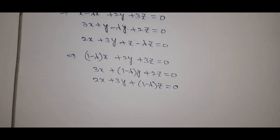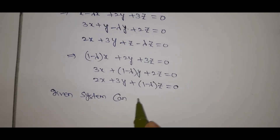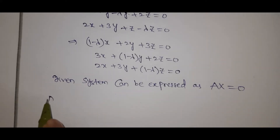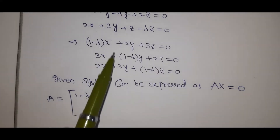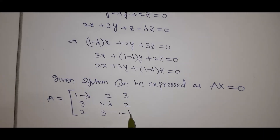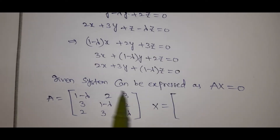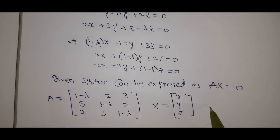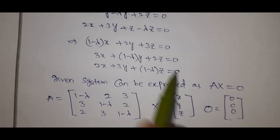The given system can be expressed as Ax = 0, where the A matrix has coefficients: first row (1−λ, 2, 3), second row (3, 1−λ, 2), third row (2, 3, 1−λ), and x is the column vector (x, y, z), with the right-hand side being the zero vector (0, 0, 0).